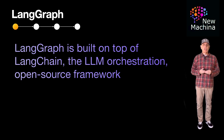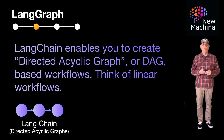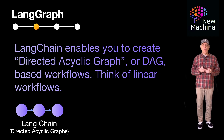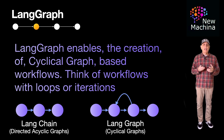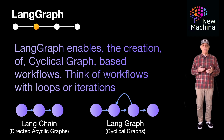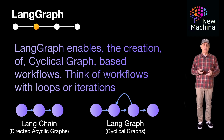LangChain, which emerged before LangGraph, supports the creation of directed acyclic graphs, also known as DAGs. These are primarily linear workflows with no support for iterations. LangGraph, on the other hand, allows for the creation of cyclical graphs, enabling more complex workflows closer to real-world agentic architectures. This capability enables more complex interactions and decision-making processes compared to traditional DAG frameworks, which are more linear by design.